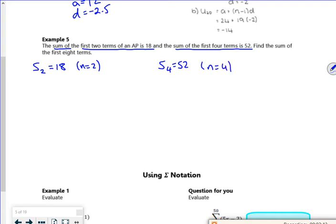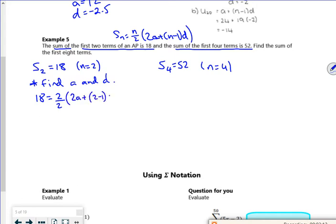So I can use this information to find the a and the d, and then I can find the sum of the first eight. So my sum equation is n over 2, 2a plus n minus 1d. So the sum equations are given, the term equations are more. So 18 is 2 over 2, 2a plus 2 minus 1d. So 18 is 2a plus d.